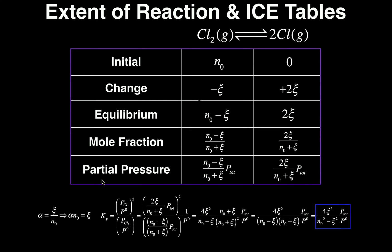To calculate the partial pressure — say of Cl₂ or of atomic chlorine — all I need to do is take the mole fraction, which is unitless, and multiply by the total pressure. The total pressure in the container is fairly easy to measure. So the partial pressure of Cl₂ is (N₀ − ξ)/(N₀ + ξ) times the total pressure, and similarly for atomic chlorine.